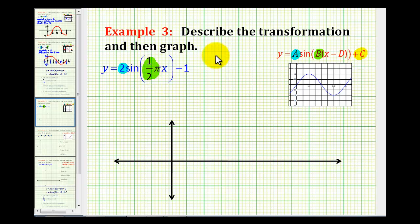And C is equal to negative one, which will be a vertical shift, up or down. So let's go through each of these.